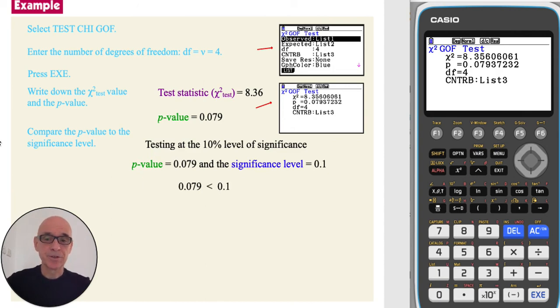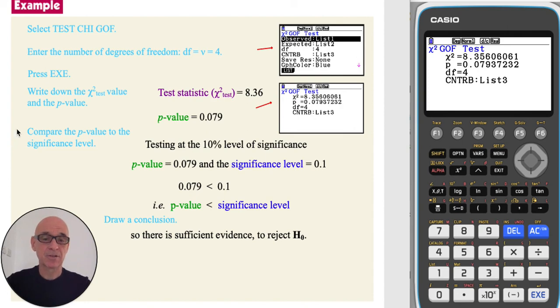So as 0.079 is less than 0.1, in other words, as the p-value is less than the significance level, we conclude that there is sufficient evidence to reject the null hypothesis.